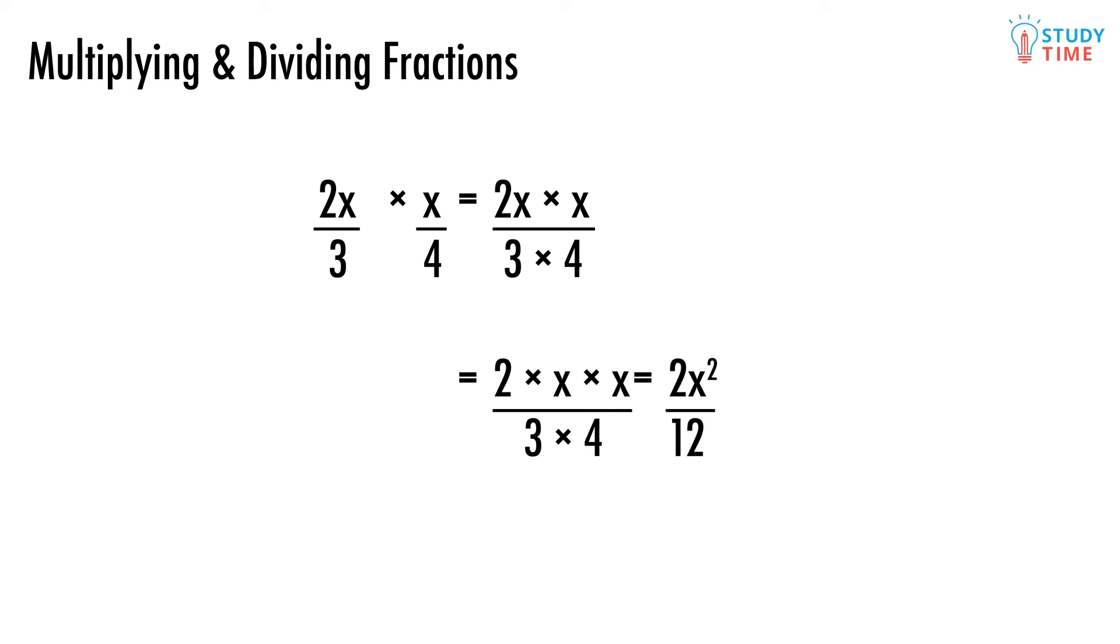Down bottom, things are simpler. We work out that 3 times 4 is 12. There we have it. 2x over 3 times x over 4 equals 2x squared over 12. We could be really clever and simplify this further as x squared over 6, because 2 over 12 is the same as 1 over 6.